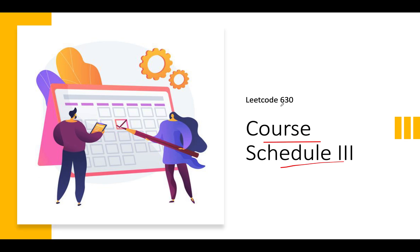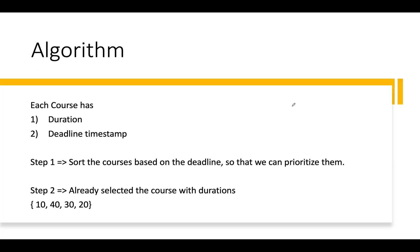LeetCode 630 - Course Schedule 3. We are given an array of courses where each course has two attributes: the first is the duration of the course, and the second is the deadline timestamp — the time by which the course must be completed, otherwise you cannot take it. We need to return the maximum number of courses that can be completed.